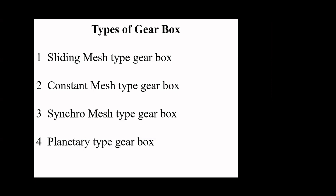We have seen what a gearbox is — it is one of the components of the transmission system — and what a gearbox does: it provides different gear ratios to the wheels according to requirement and converts torque output to torque input. Now we should see the different types of gearbox: sliding mesh type, constant mesh type, synchromesh type, and planetary type — these are the four main types. Another classification includes manually operated selective type, overdrive, semi-automatic gearbox, and automatic transmission gearbox.